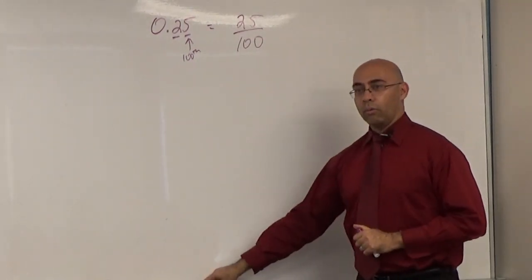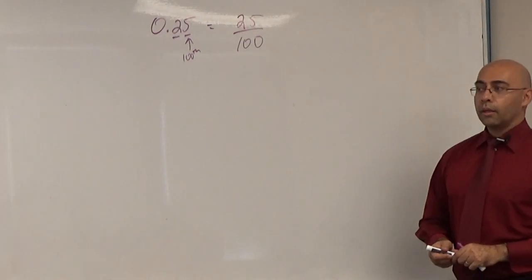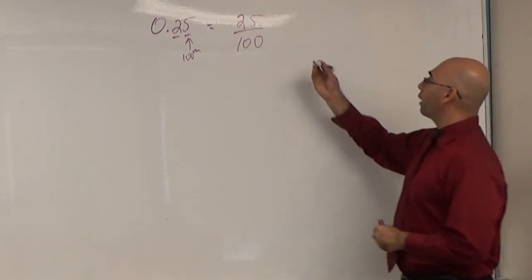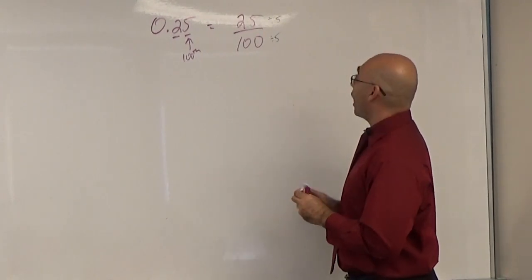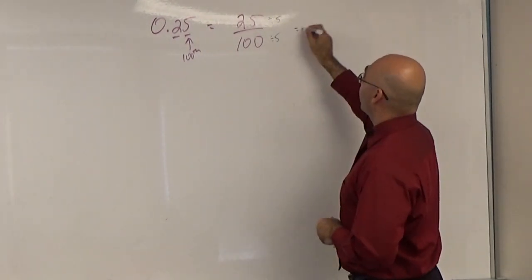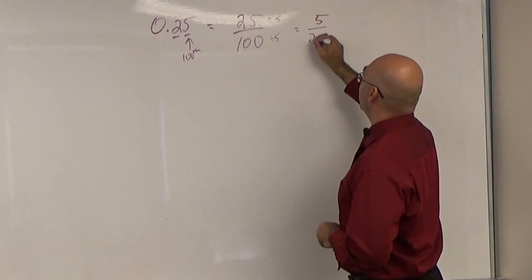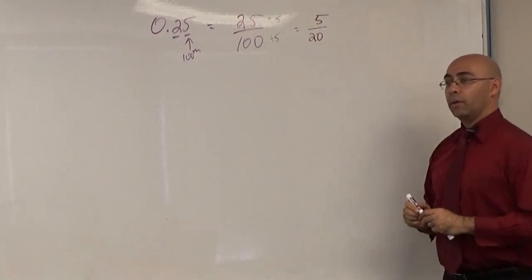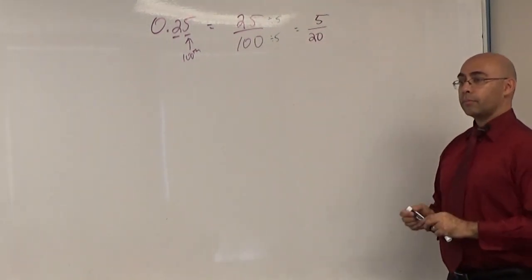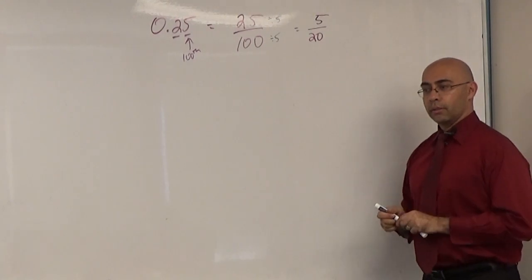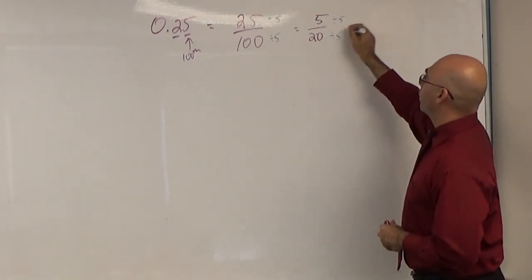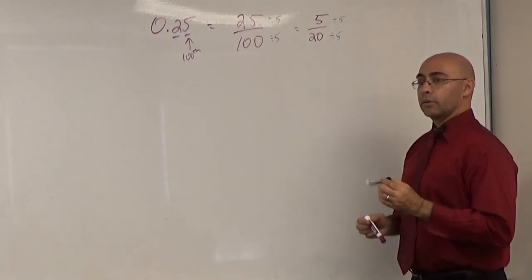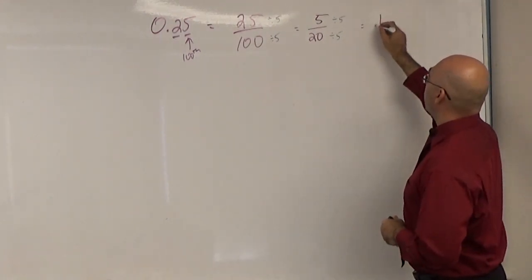No. What can I reduce this by? You can divide it by 5. So when I divide top and bottom by 5, I get 5 over 20. Is this in simplest form? No. Why not? I can reduce it by another 5. So that means 5 divided by 5 is 1, 20 divided by 5 is 4.